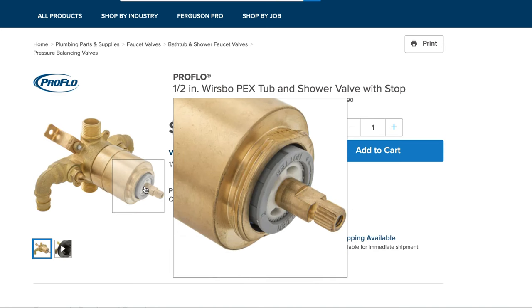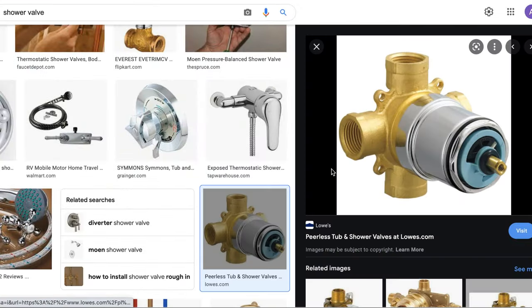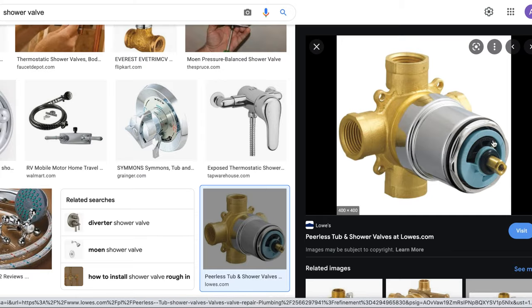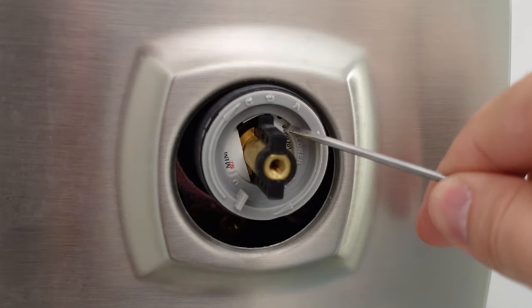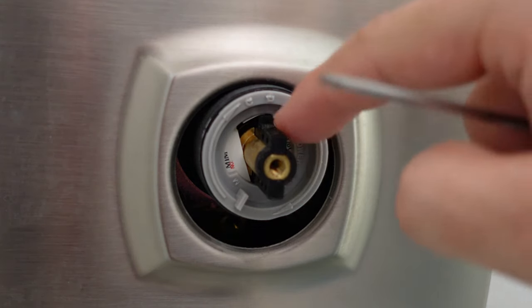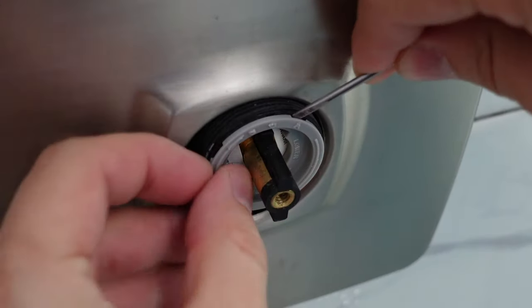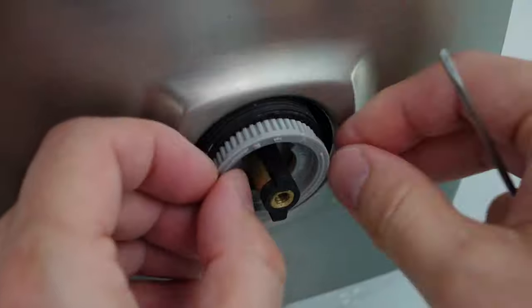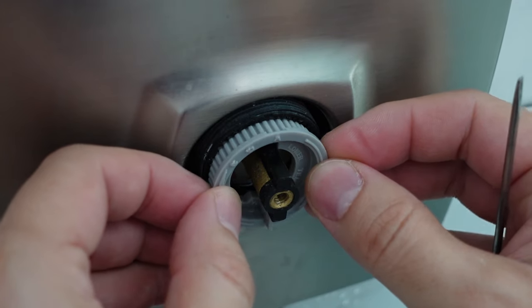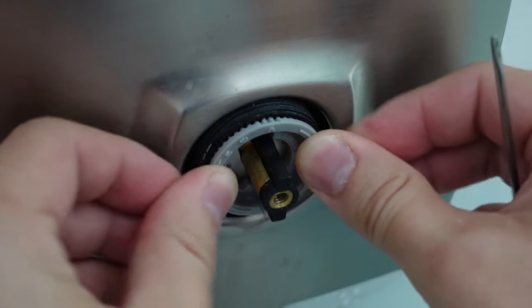Step three, typically every shower valve will have some sort of plastic piece like this that you have to remove, make the adjustment and put it back. As you can see, I have a little space right here, which tells me that I have a little bit more room to adjust my hot water. Take a small screwdriver and pop off the plastic piece. Make the adjustment as necessary and install it back in place.